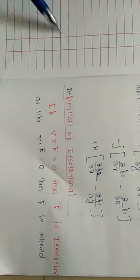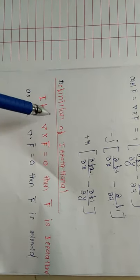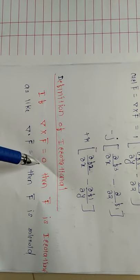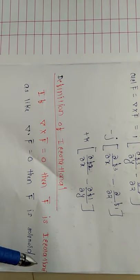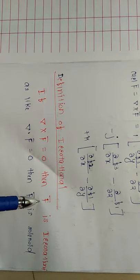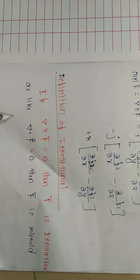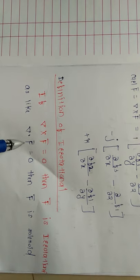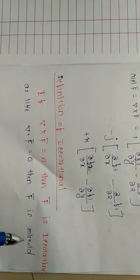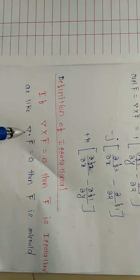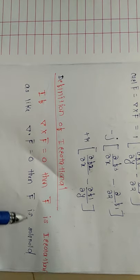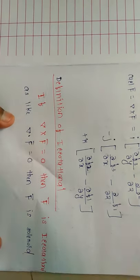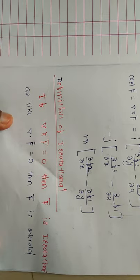Next, the definition of irrotational: if del cross f-bar equals zero, then f-bar is called irrotational. From the last lecture, if del dot f-bar equals zero, then f-bar is solenoidal. So: del dot f-bar = 0 means solenoidal; del cross f-bar = 0 means irrotational. Now we will see an example.